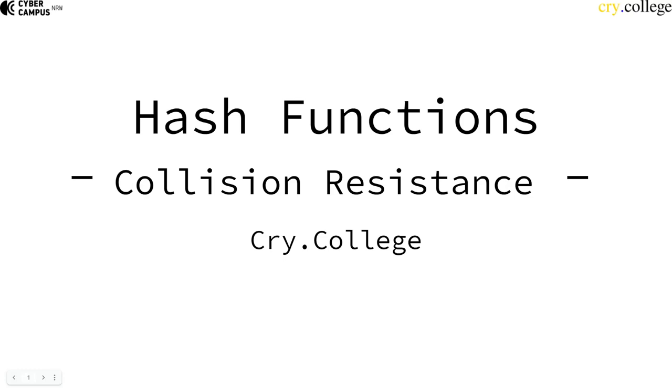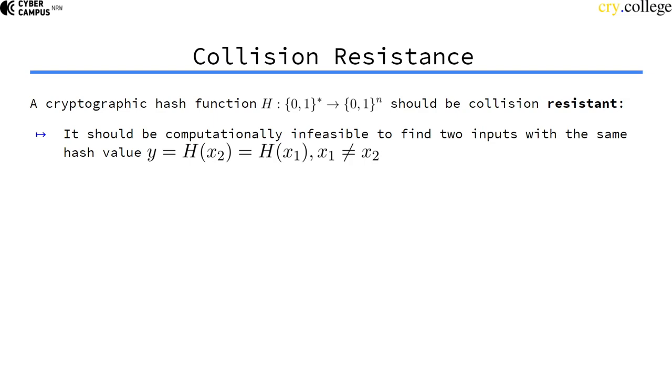So the next security property I want to look into is collision resistance, because hash functions should be collision resistant. And what does that mean?